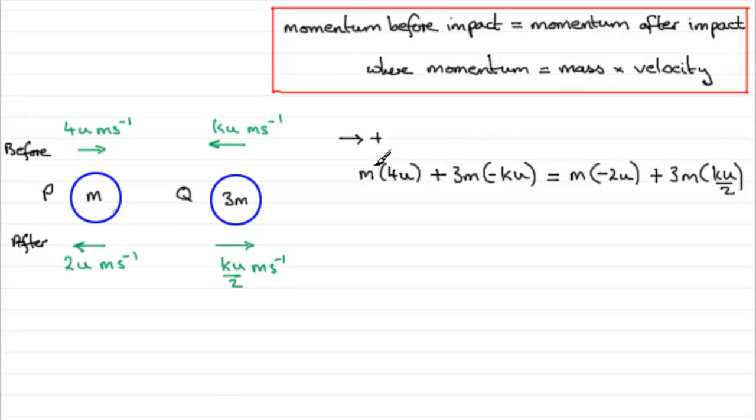Divide each term by mu. So that will go, that will go, that will go, and that will go. You don't have to do that at this stage. You can do that at a later stage. But it does simplify the problem at this point.